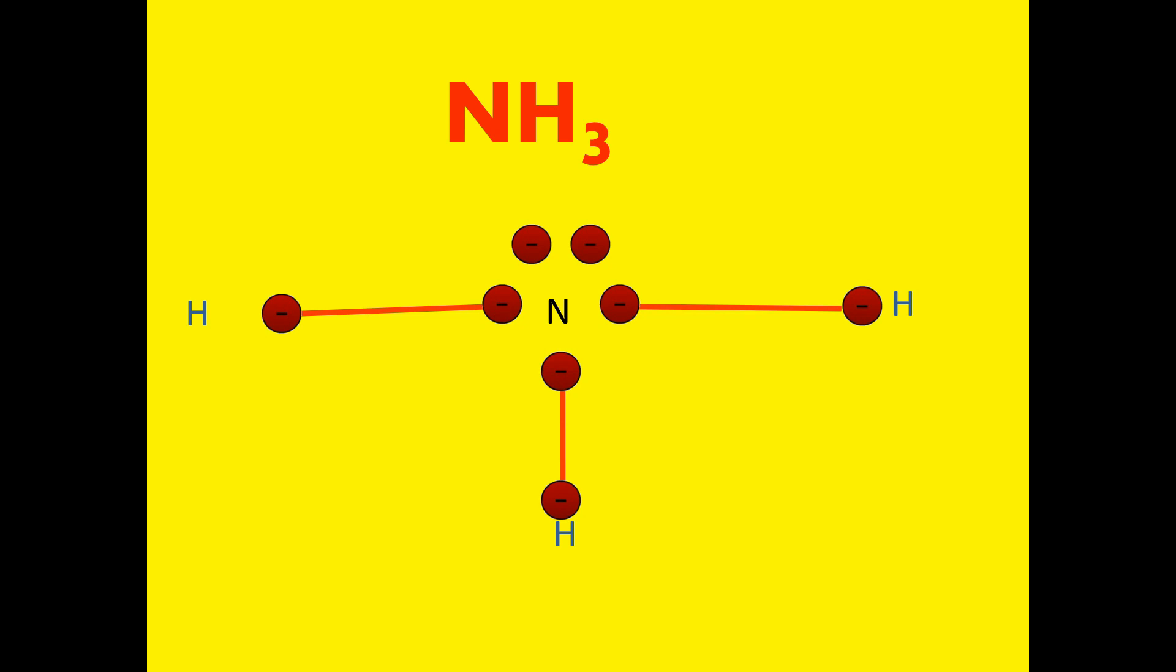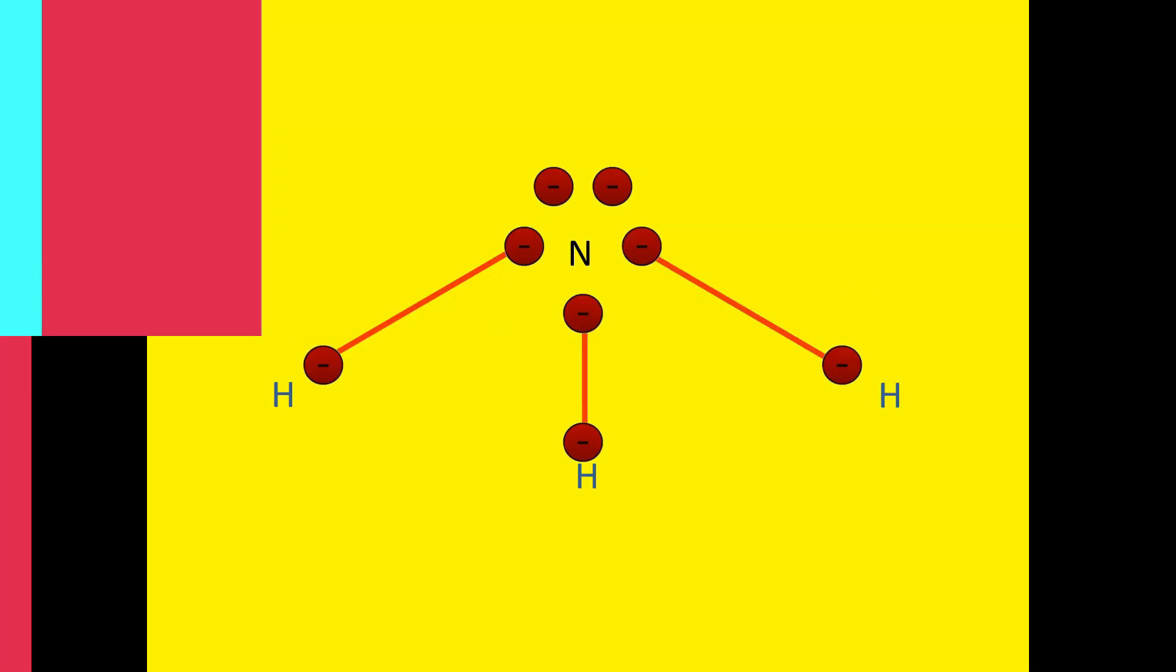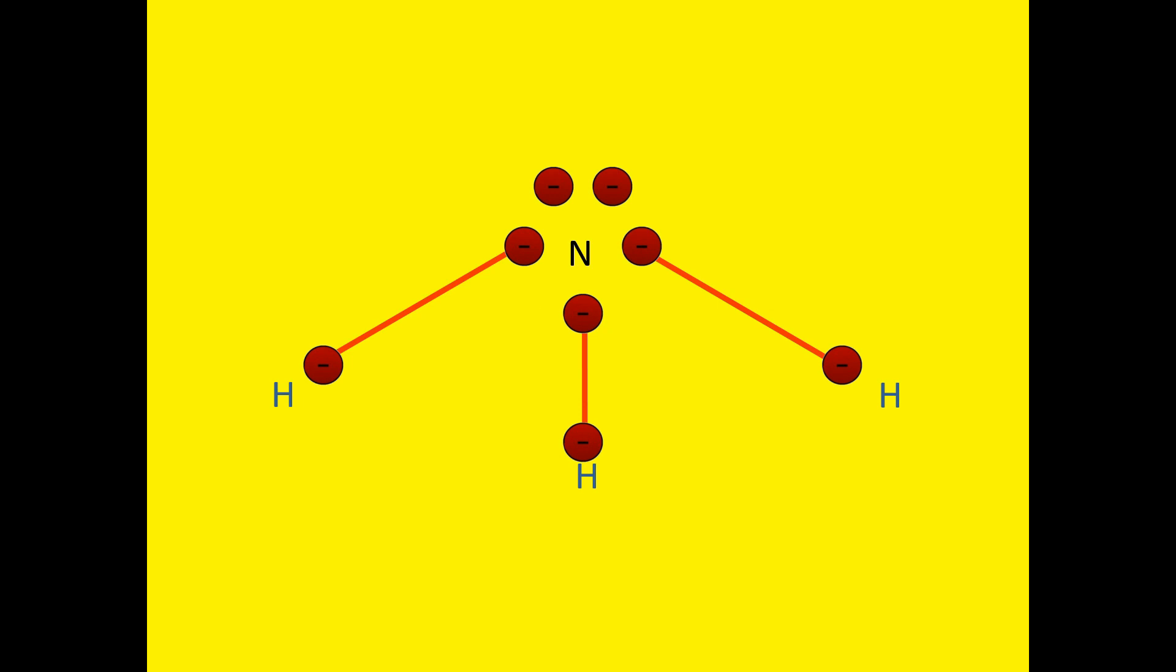Observe the shape of the molecule, since its shape is not really this, but in reality, the bonds are bent, as if they were pushed downward. But what made it bend? It was those pair of electrons on top.